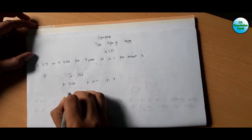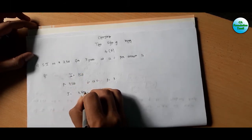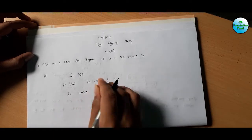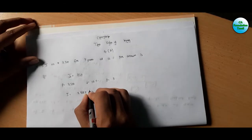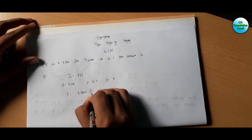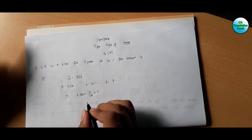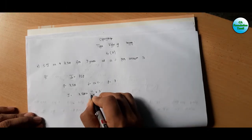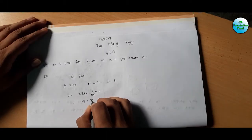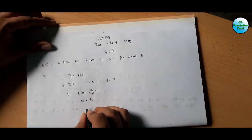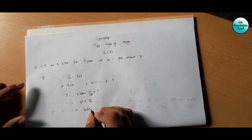So I = P × i × T = 3,500 into 12% into 3 years. Remaining: 12 into 3 is equal to 36, and 35 into 36 equals 1,260. So the answer is ₹1,260, which is Option B.